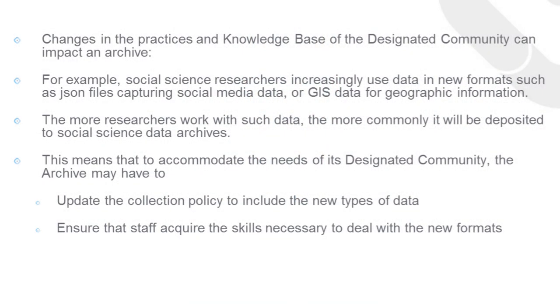For example, converting a Word file to PDF-A format may be adequate if all the designated community needs to do is read or print the file. But converting statistical data captured in an Excel sheet to PDF means making it utterly unusable for social science research, because the data is no longer machine readable. Changes in the practices and knowledge base of the designated community can impact an archive — for example, social science researchers increasingly use data in new formats such as JSON files capturing social media data or GIS data for geographic information. The more researchers work with this data, the more commonly it will be submitted to social science data archives for preservation, meaning an archive may have to update its collection policy and ensure staff acquire the skills necessary to deal with the new formats.